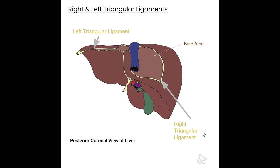The right triangular ligament arises from the inferior lateral border of the bare area and connects to the diaphragm. It is continuous with the anterior and posterior coronary ligaments at the edge of the bare area. The left triangular ligament is on the other side of the liver, arising from the superior border of the left lobe and connecting to the diaphragm. It is also continuous with the anterior and posterior coronary ligaments. These ligaments are better seen from the posterior view of the liver.